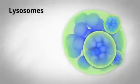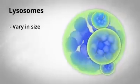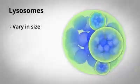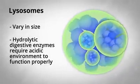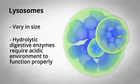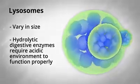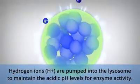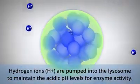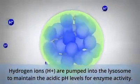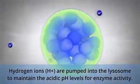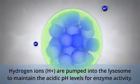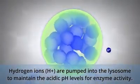The size of lysosomes varies, and the digestive enzymes inside these purifying vesicles require a steady acidic environment to be able to function properly. There is a complex process of pumping in hydrogen ions across the vesicle membrane to maintain the acidic pH levels necessary for optimal enzyme activity.